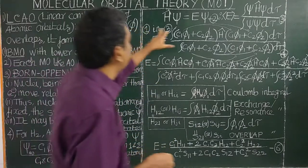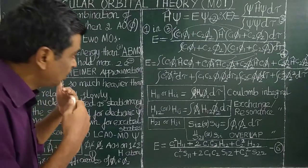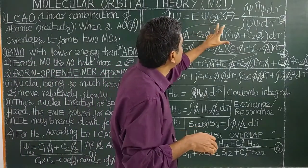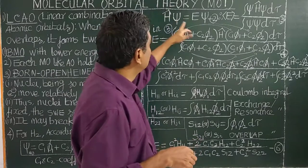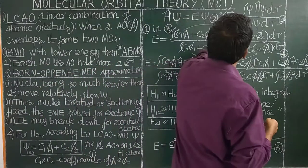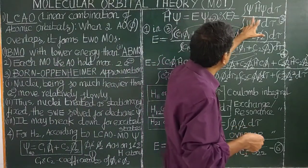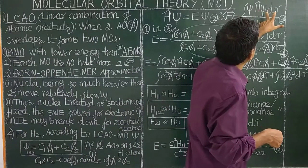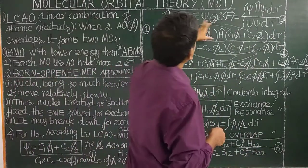Now consider the Schrödinger wave equation, also called the eigenvalue equation: Ĥψ = Eψ. This is the fundamental equation used for the particle in a box, rigid rotator, and hydrogen atom problems. Here Ĥ is the Hamiltonian operator, ψ is the molecular orbital wave function, and E is the observed energy. The energy is obtained using the expectation value expression from the postulates of quantum mechanics. We then substitute the LCAO expression for ψ into this energy expression.